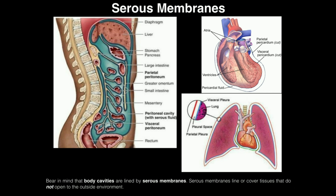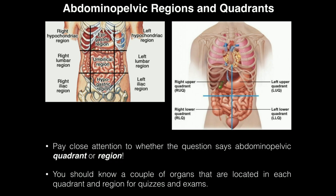To summarize: peritoneum is for the abdominal pelvic cavity, pleura are for the lungs, and pericardium is for the heart. Parietal always lines the wall of the cavity and is most superficial, while visceral lines the organ itself and is the deepest. Those are our serous membranes.